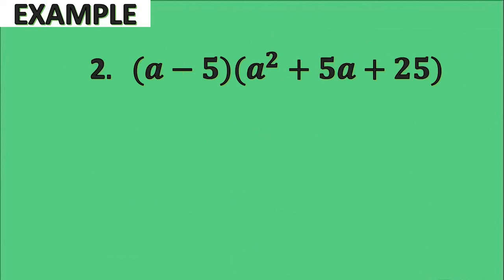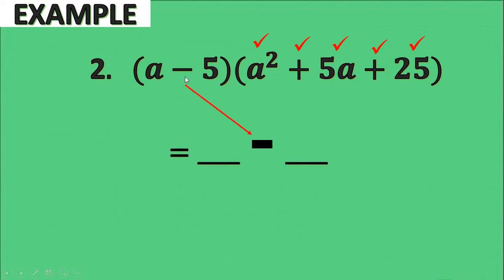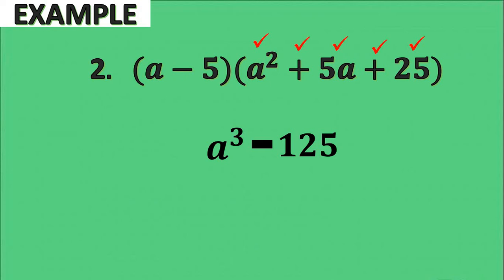For our second example, we have the quantity a minus 5 times the quantity a squared plus 5a plus 25. Checking the form: the square of a is a squared, the square of 5 is 25, and the product of a and 5 is 5a. We have a plus sign in the trinomial's second operation, and a plus sign in the first operation — which is opposite to the minus sign on the binomial. We can use the shortcut. The operation is minus. Cubing a gives a cubed, and cubing 5 gives 125 (5 times 5 times 5). Therefore, the answer is a cubed minus 125.